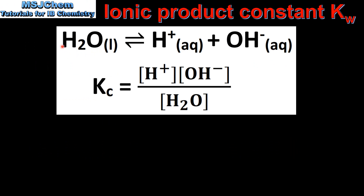Here we have an equation for the ionization of water, in which a water molecule ionizes to form a hydrogen ion and a hydroxide ion. If we look at the expression for the Kc, the equilibrium constant, we have the concentration of the hydrogen ions multiplied by the concentration of the hydroxide ions in the numerator, and the concentration of the water in the denominator.